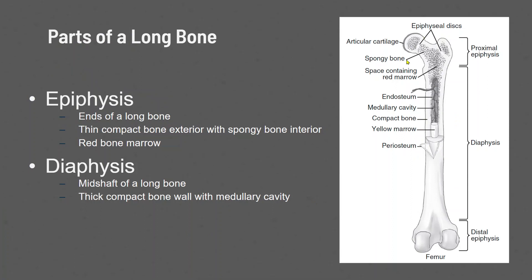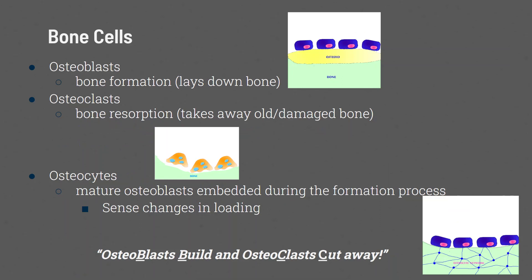There are three bone cells, and they all start with 'osteo,' the prefix for bone. Osteoblasts are bone formation cells — they lay down what we call osteoid, which is then mineralized, increasing bone mass. Osteoclasts are bone resorption cells — they eat away old and damaged bone, making little pits that are then filled in by osteoblasts. Osteocytes are mature osteoblasts embedded in the bone, forming a network that can sense changes in loading — whether you're working out a lot or sitting on the couch.